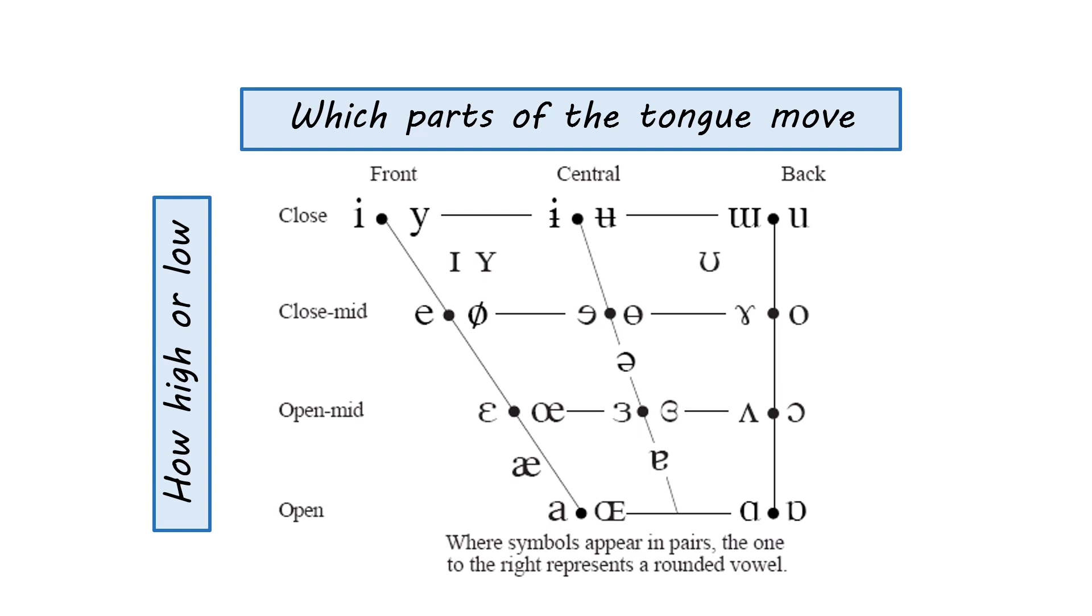The ones that I want to draw your attention to is the little note at the bottom that says where symbols appear in pairs then the one on the right is a rounded vowel. So that's where lip rounding comes in. So we put them on the same dot but the rounded version is on one side of the dot and the unrounded version is on the other side of the dot.